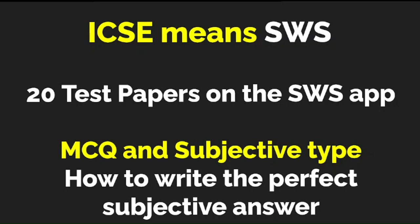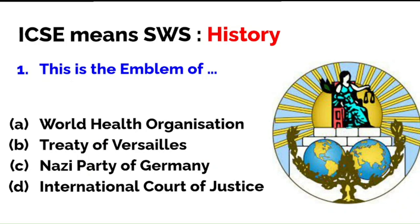This is the emblem of the World Health Organization — I hope you can see the picture on your screen. The options are: the Treaty of Versailles, the Nazi Party of Germany, or the International Court of Justice. You need to pay attention to photographs in your book. The correct answer is option D — International Court of Justice. If you look at the emblem carefully, you can see it has a scale (tarazu), which tells you it relates to law.